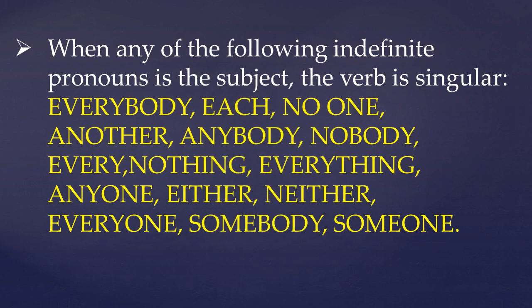The last rule from the previous lecture: when any of the following indefinite pronouns are the subject, the verb will be singular — everybody, each, no one, another, anybody, nobody, every, nothing, everything, anyone, either, neither, everyone, somebody, someone. When these indefinite pronouns are the subject, the verb will be singular. These were the previous rules that we have studied.